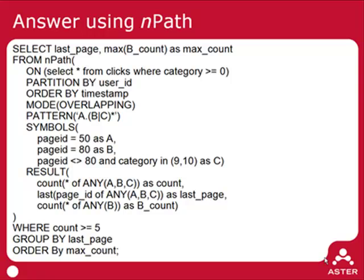The second aggregate is the page ID of the last page in the path. We use an aggregate custom to nPath called 'last', which matches the last row of any A, B, or C — so it looks at the entire path, finds the last element, and pulls out the page ID. Finally, we also want to compute the count over just B's. This maps back to the business question: for any particular path, tell me how many times the user went to page ID 80. So NPath outputs three columns: count, last page, and Bcount, acting as a table over all clicks in category greater than or equal to zero, computing a single row each time it matches a path.